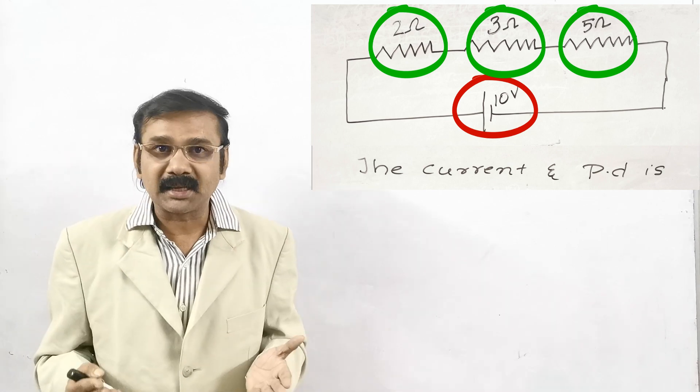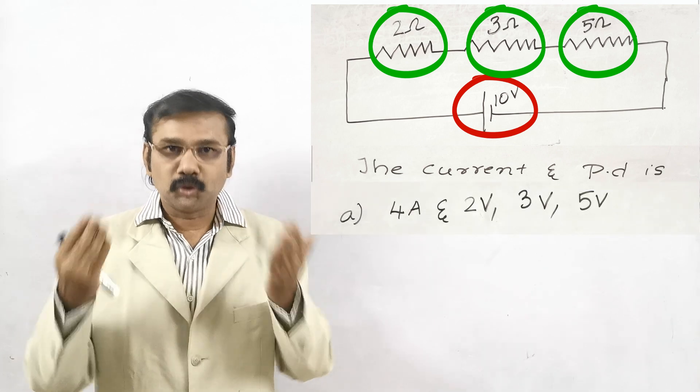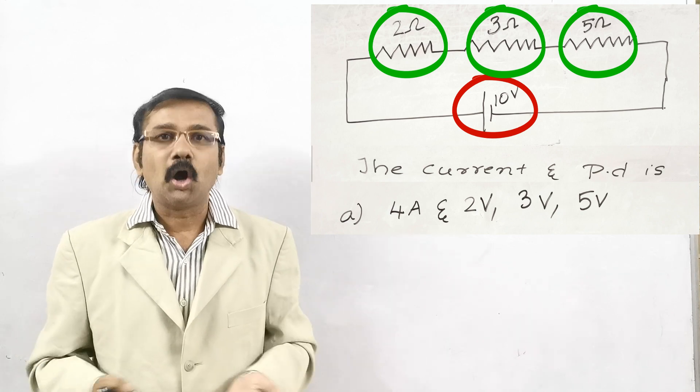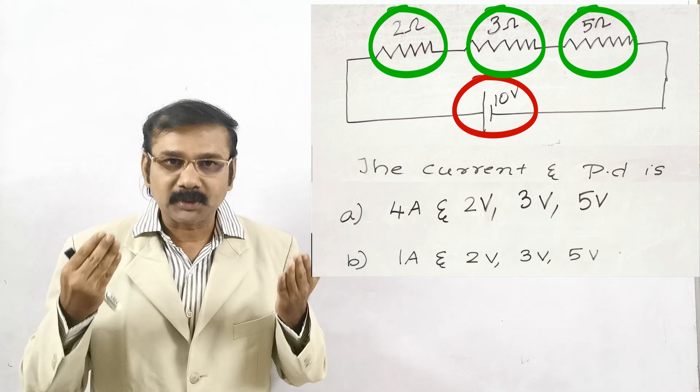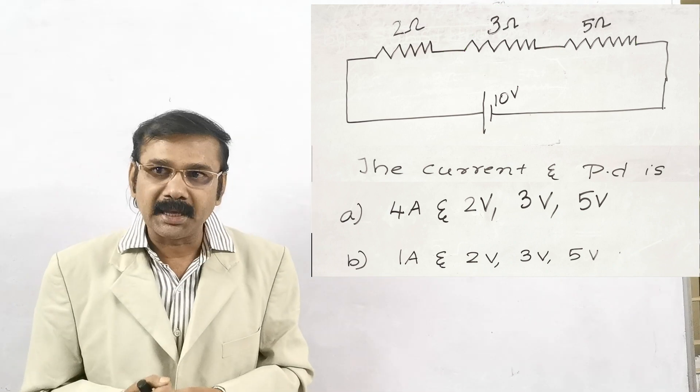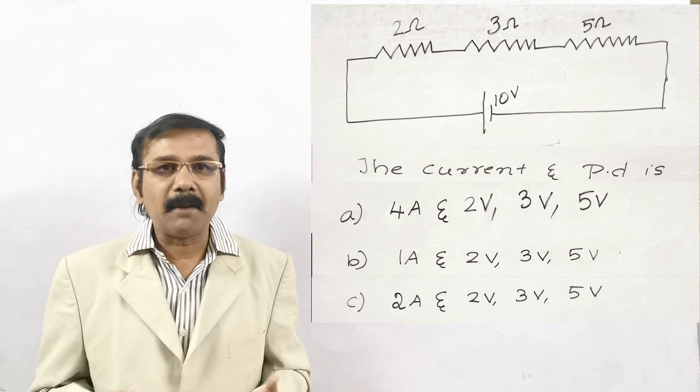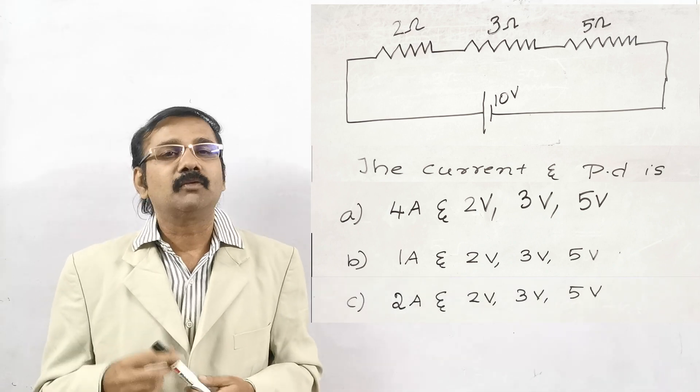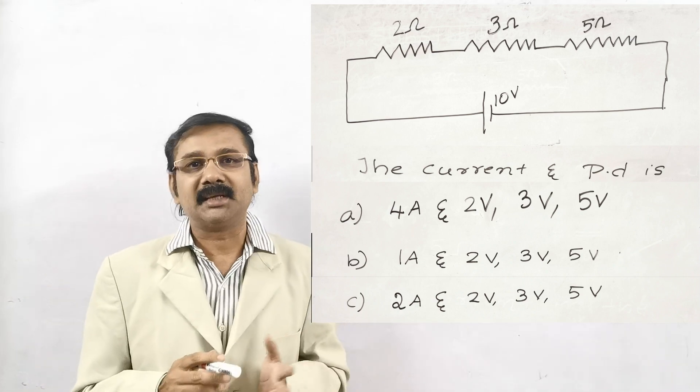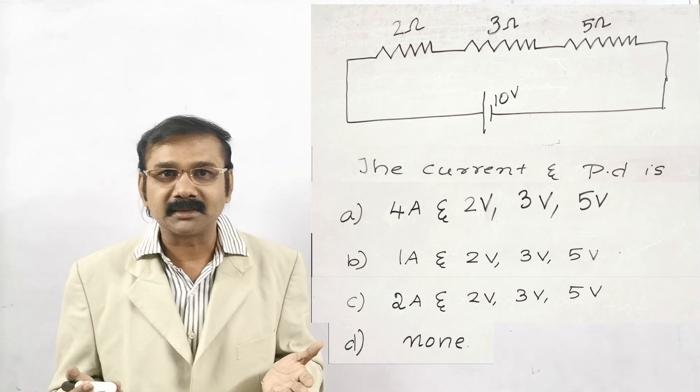So the options were given as: Option A: 4 ampere, 2 voltage, 3 voltage and 5 voltage. Option B: 1 ampere, 2 voltage, 3 voltage and 5 voltage. Option C: 2 ampere, 2 voltage, 3 voltage and 5 voltage. And finally you can see the D option is none. You are supposed to give the answer within 3 seconds.